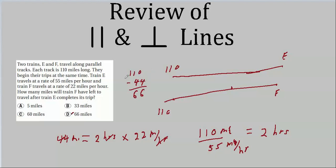Don't get too excited just because your answer matches one of the choices — test makers are good at including answers that reflect common mistakes. For instance, they could have put 44 as a choice since you compute it along the way and might grab it, forgetting to subtract from 110. My general rule: on all tests, expect to be deceived.